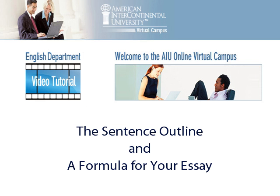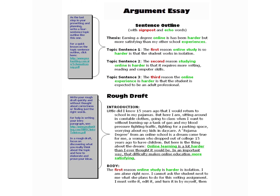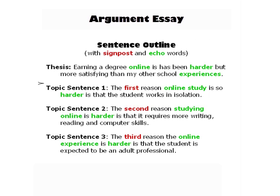Let's take a look at the sentence outline and how to use it in your essay. A sentence outline in this essay consists of four sentences. Let's take a look at them right there under sentence outline. The first sentence you want to write is your actual thesis statement — the overall idea or controlling idea that you're going to develop throughout the essay.